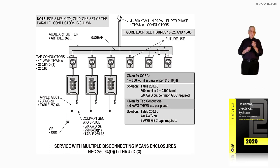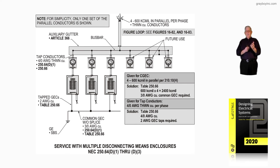The notes call out certain things that are important to know, and they may illustrate the complete requirement by providing two, three, or four notes — whatever is needed to explain it in detail. So the illustration reflects the information needed to size the common grounding electrode conductor where you have multiple service disconnecting means, as shown in illustration 16-84.